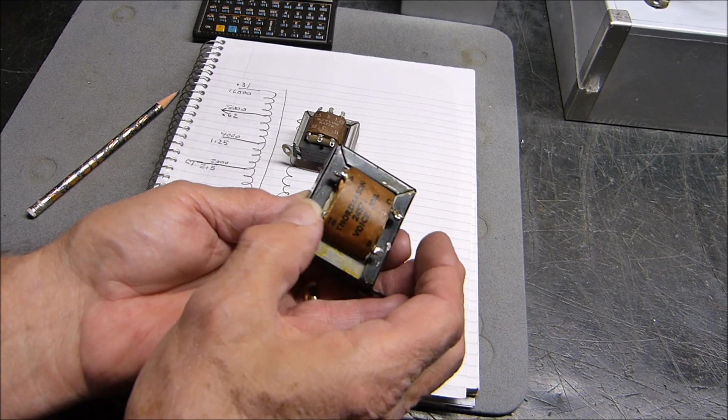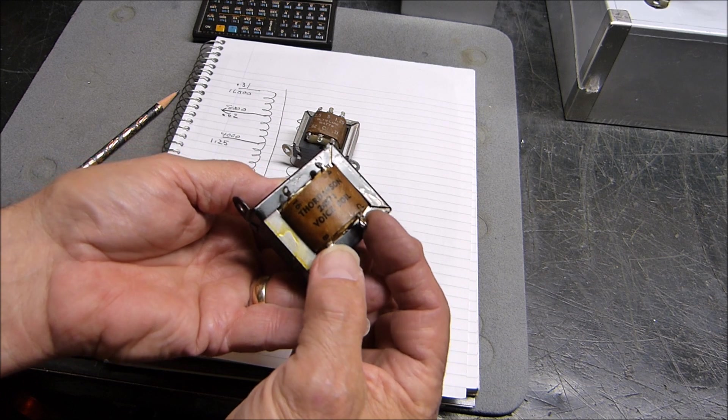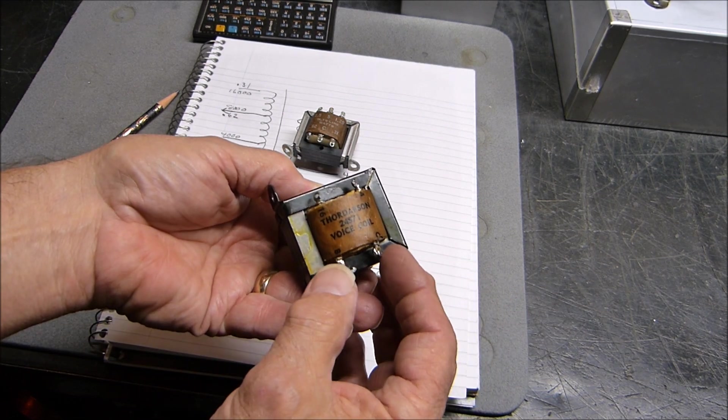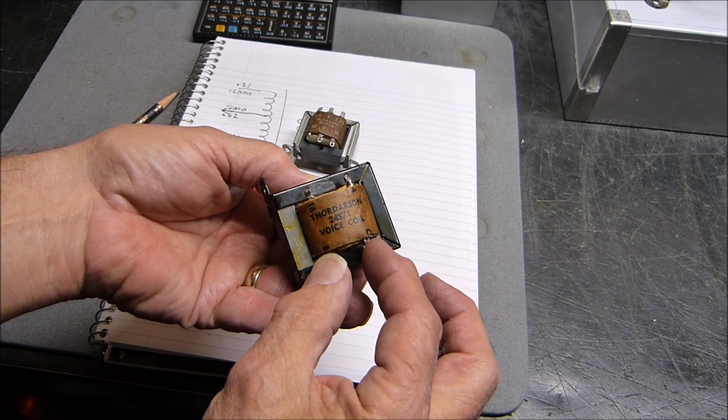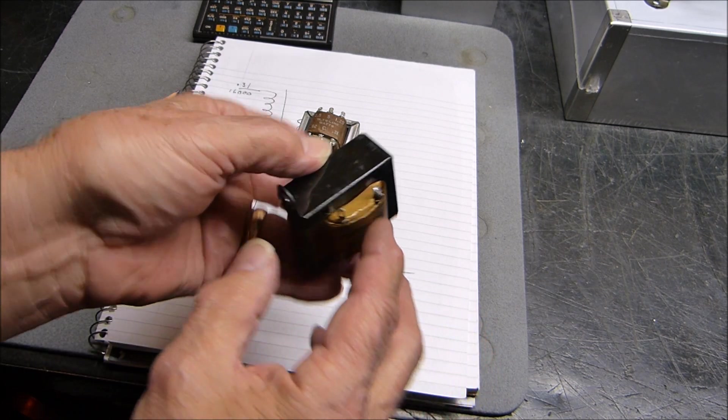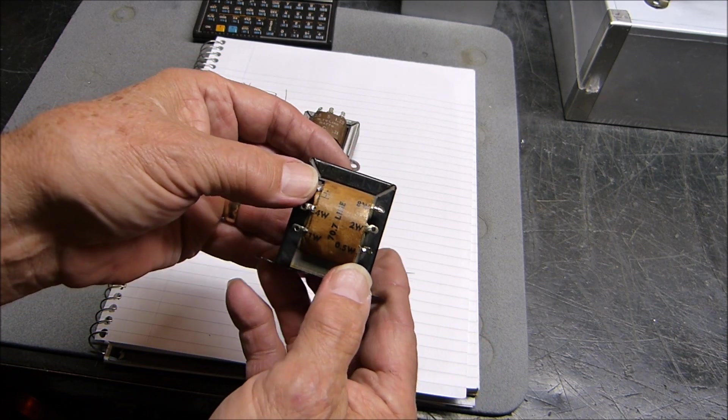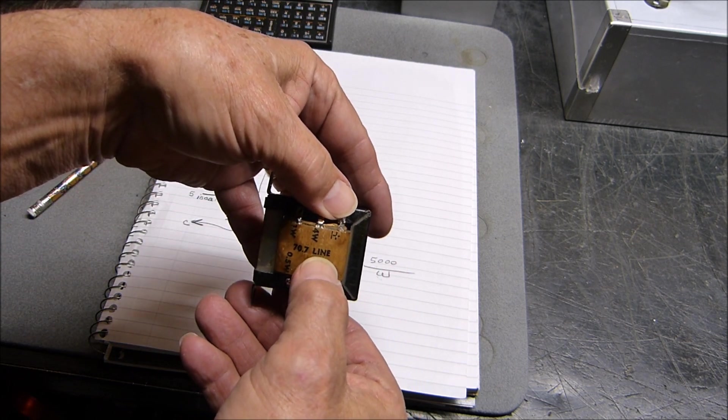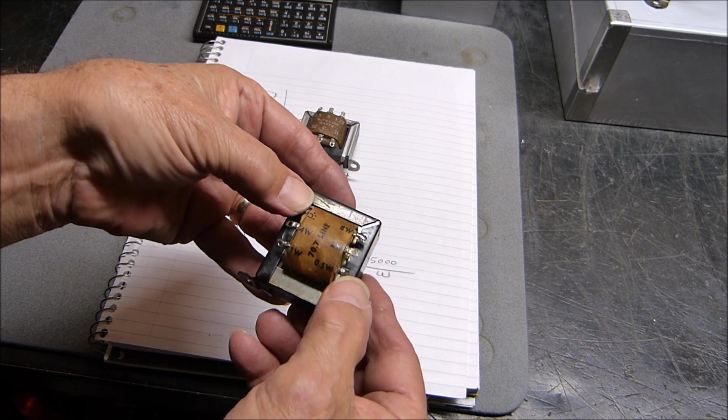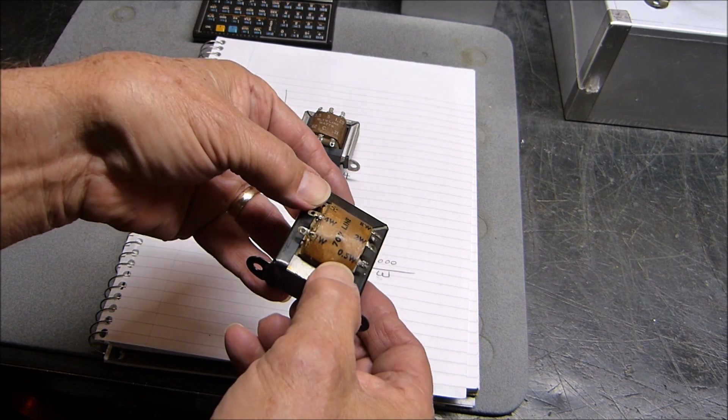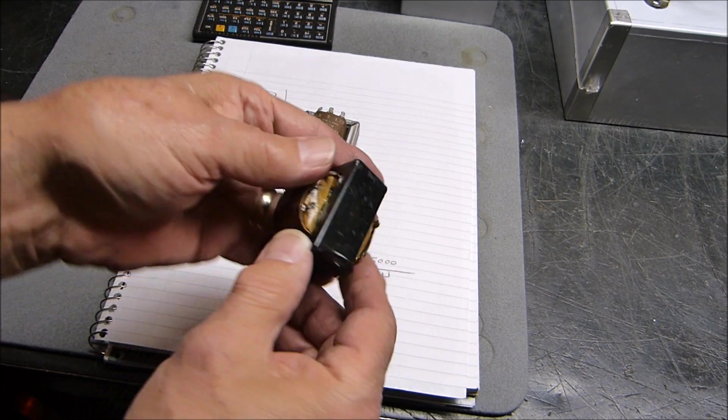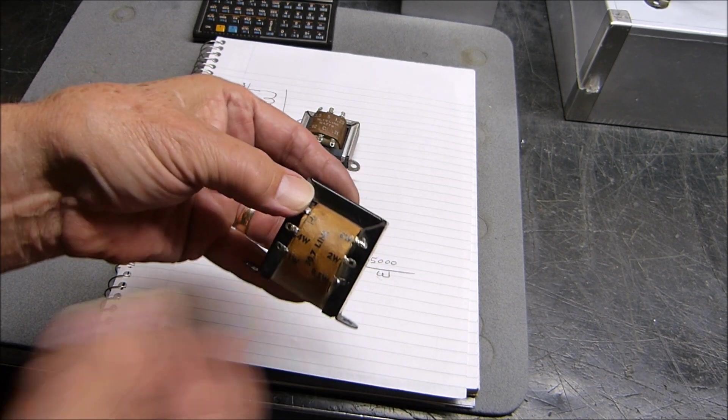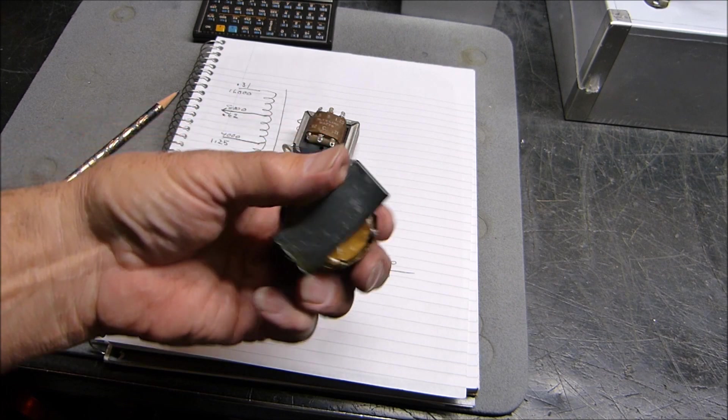Let's say we put an eight ohm load from common to eight. If we put a 70.7 volt RMS signal between common and 0.5, we're going to get a half watt out this side. If we put it between common and one, we get one watt; two watts, four watts, or eight watts.